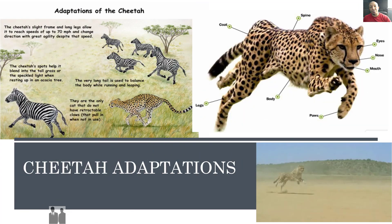Piggybacking off survival of the fittest, let's look at the cheetah, one of the top predators in the world. The cheetah's slight frame and long legs allow it to reach speeds of up to 70 miles per hour and change direction with great agility. The cheetah's spots help it blend into tall grass or speckled light when resting in an acacia tree, making it difficult for prey to spot them. Their very long tail is used to balance the body while running and leaping. They are the only cat that does not have retractable claws, so their claws are always out and ready.